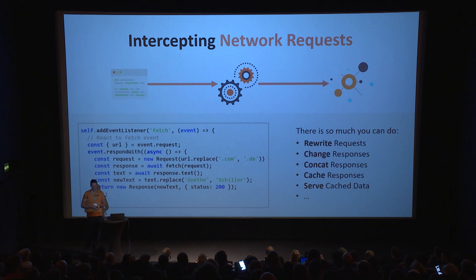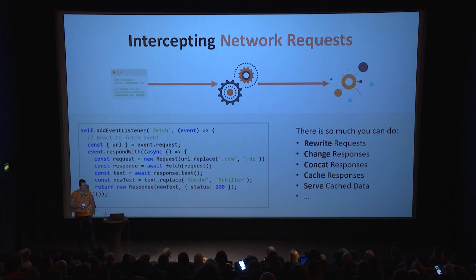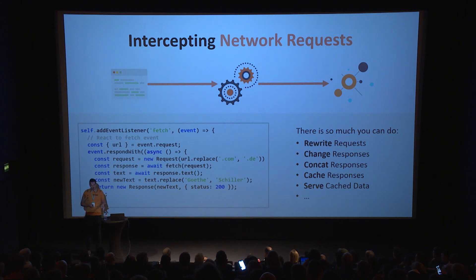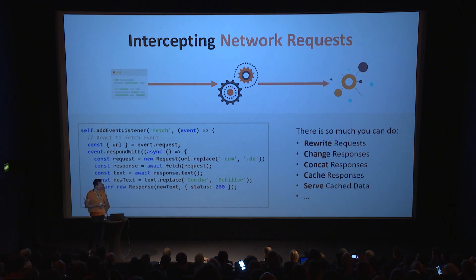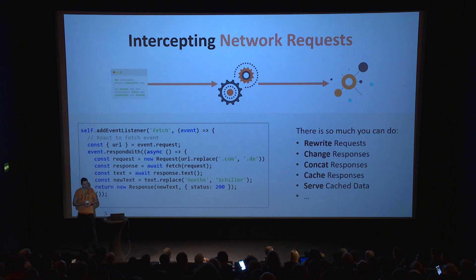There are many things you can do with fetch interception: you can rewrite requests, change responses, concatenate responses — for example, combine many files into one single response. You can cache the responses and serve cached data. This is all ES6 with newer features like await, and you can use all of that in service workers, because all browsers that support service workers also have the new ES6 and ES8 features.